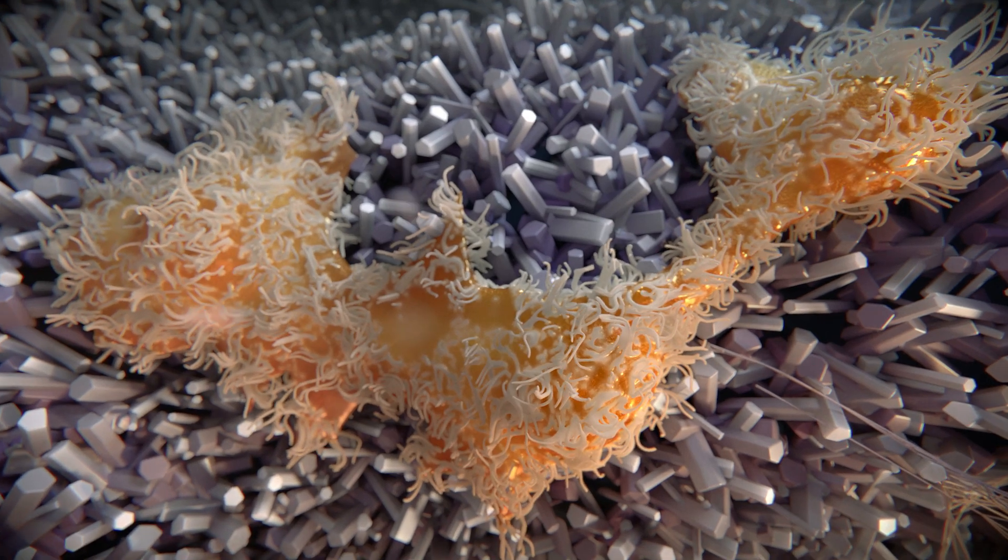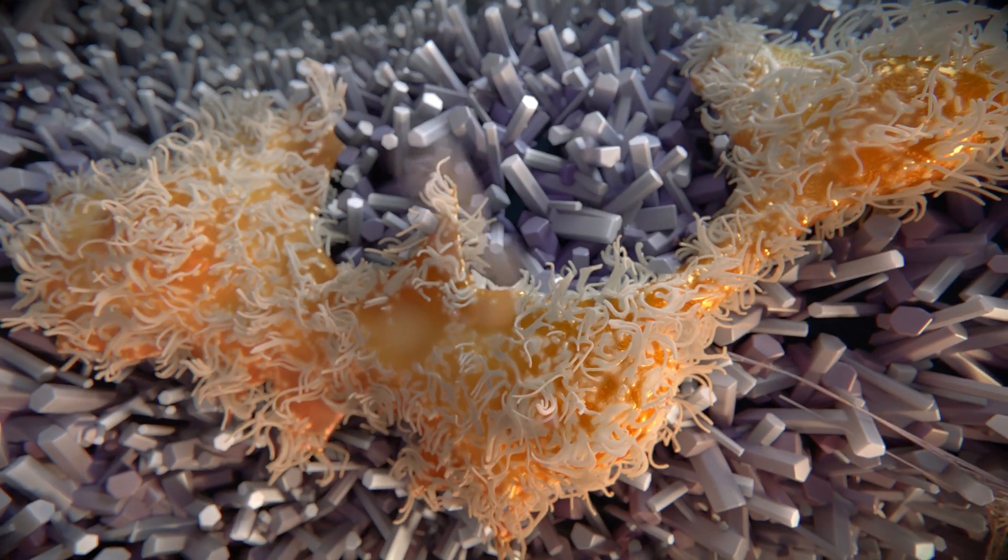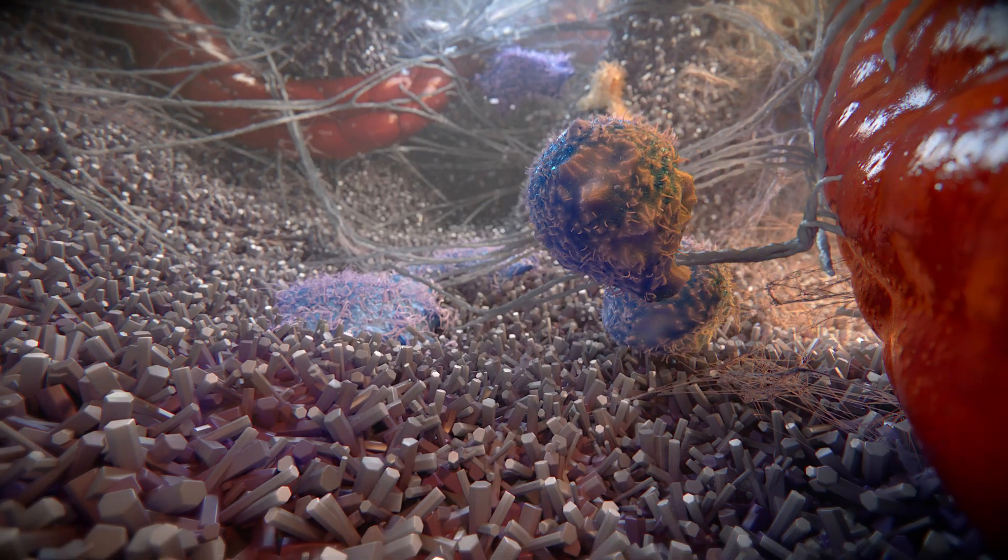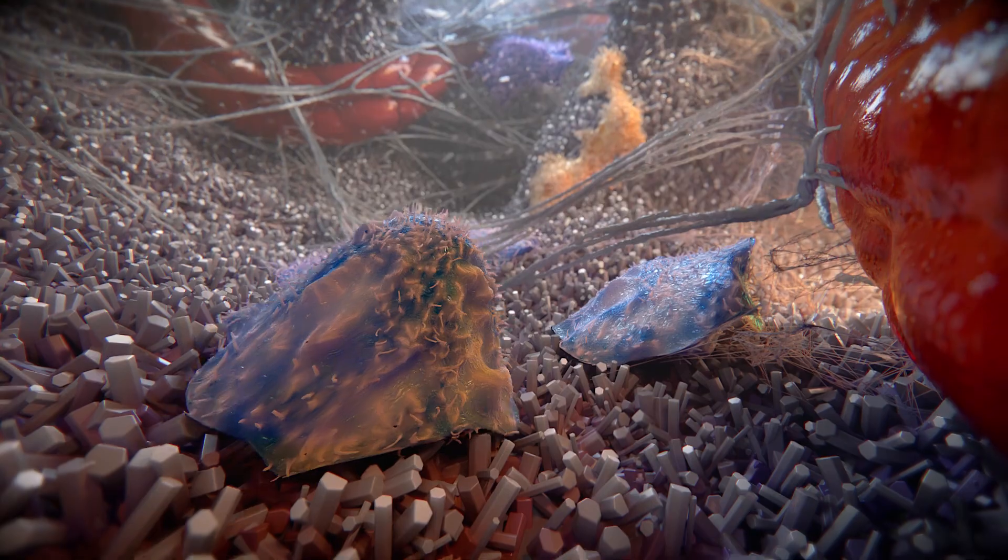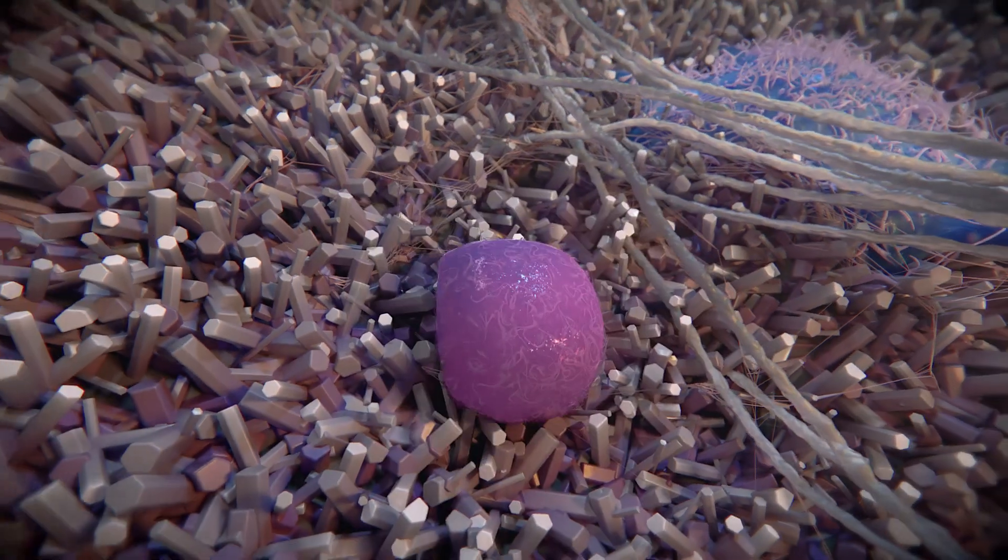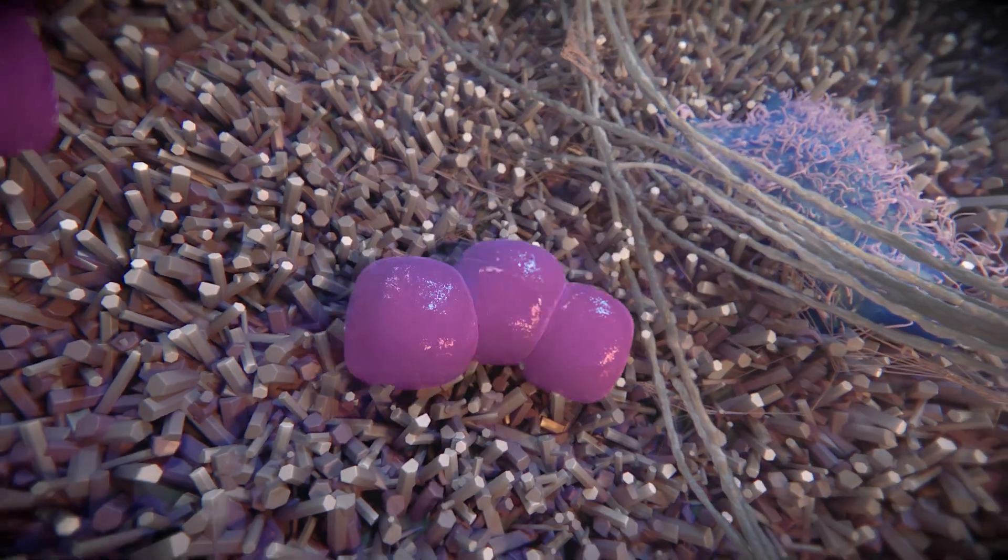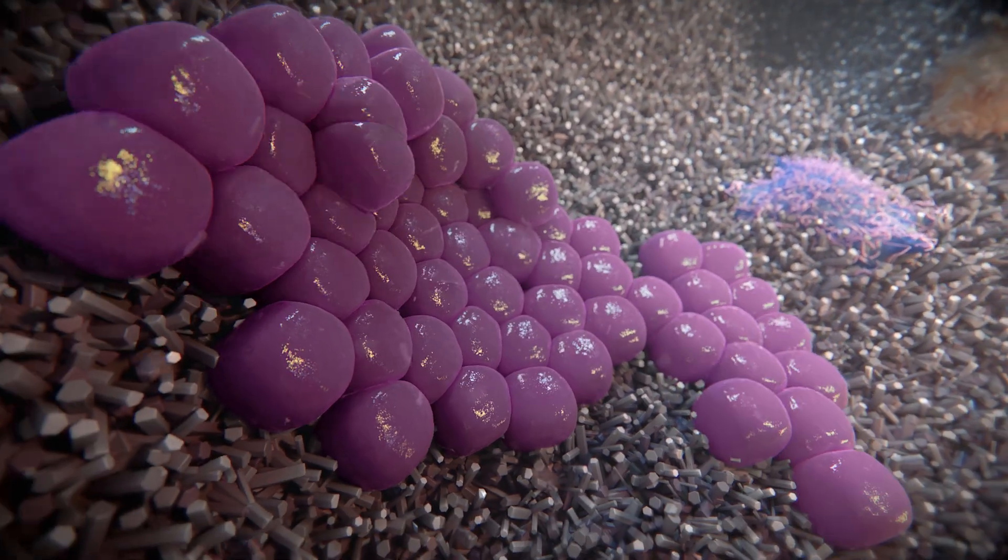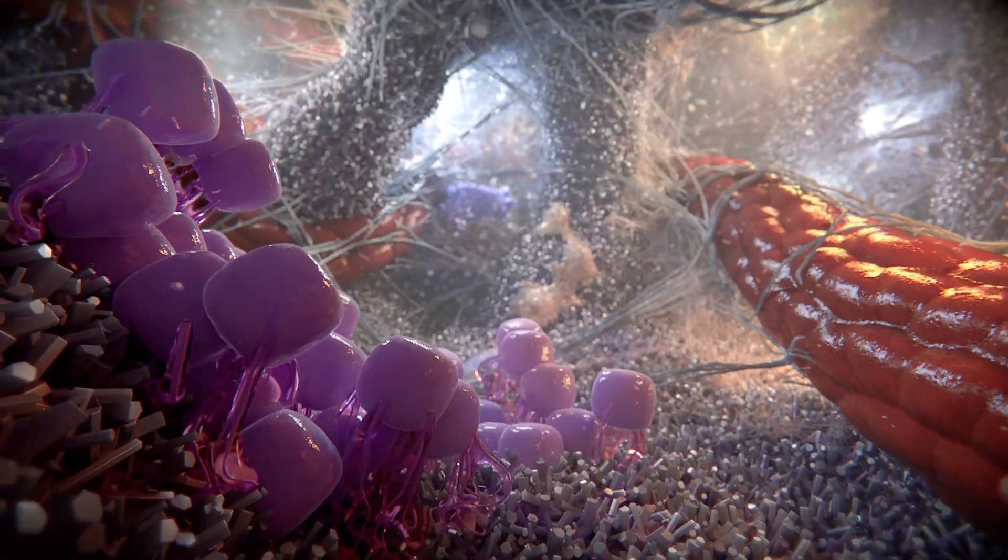M2 macrophages have been shown to express BMP2 and crosstalk with stem cells via the prostaglandin PGE2 pathway. The recruited progenitor cells in turn differentiate to osteoblasts. These cells then begin the work of laying down collagen that will soon mineralize to form new bone.